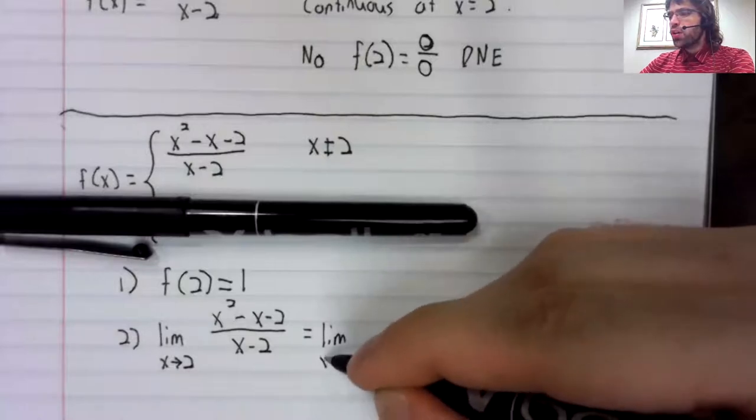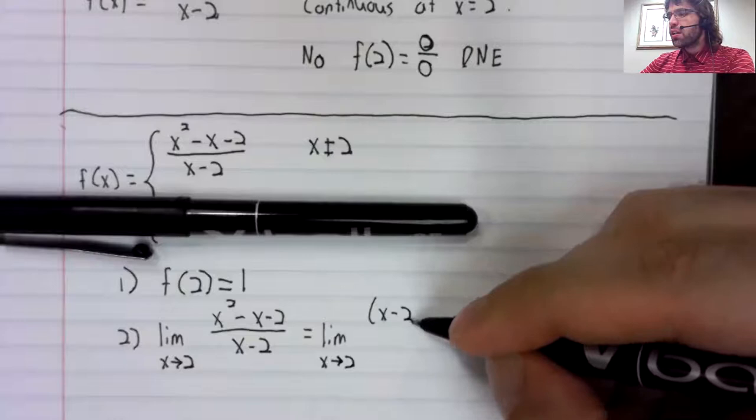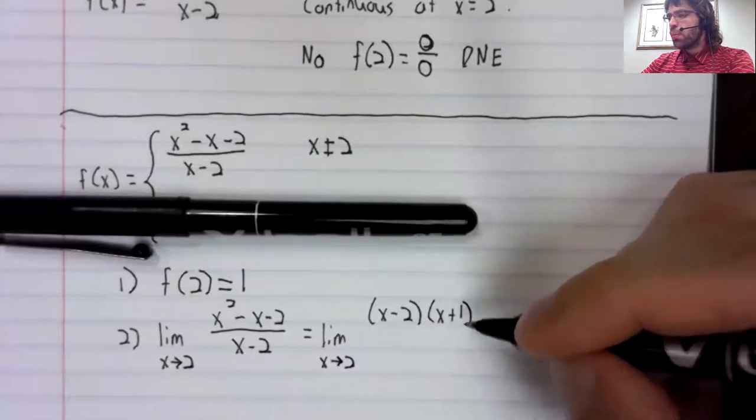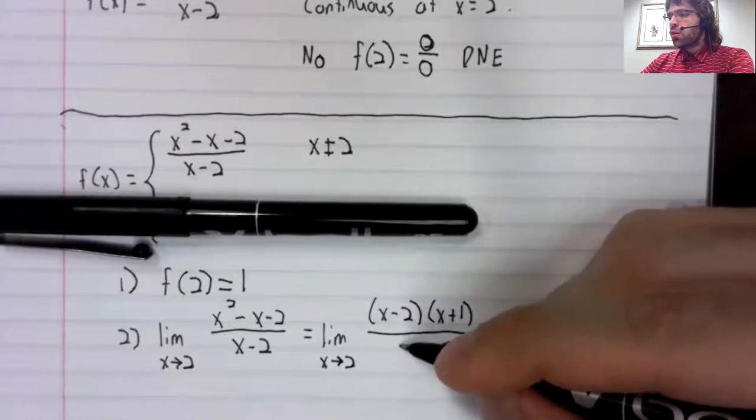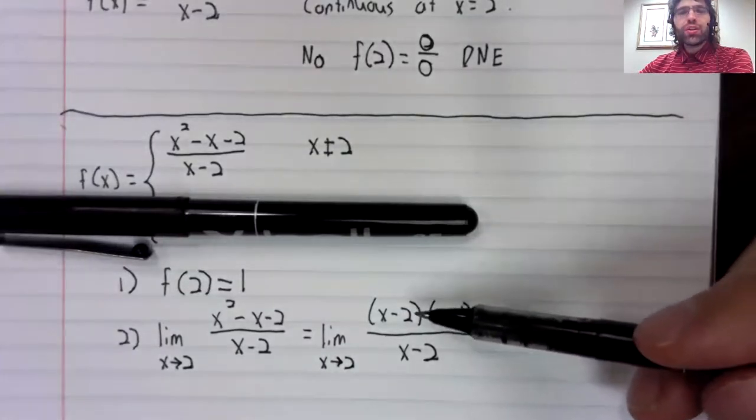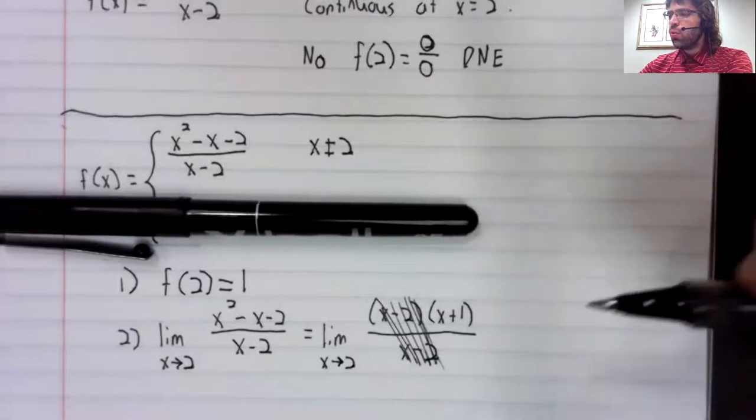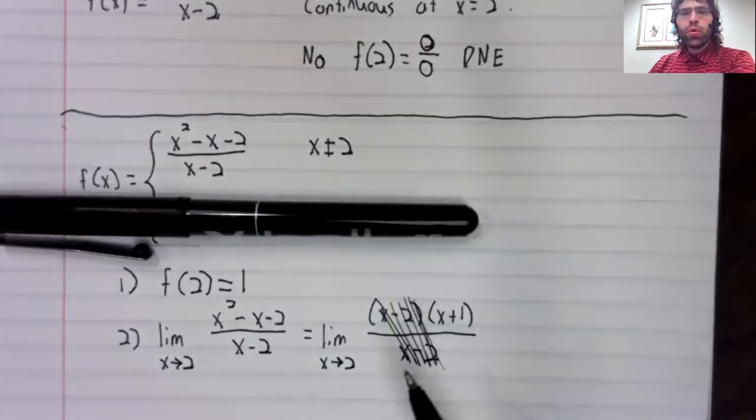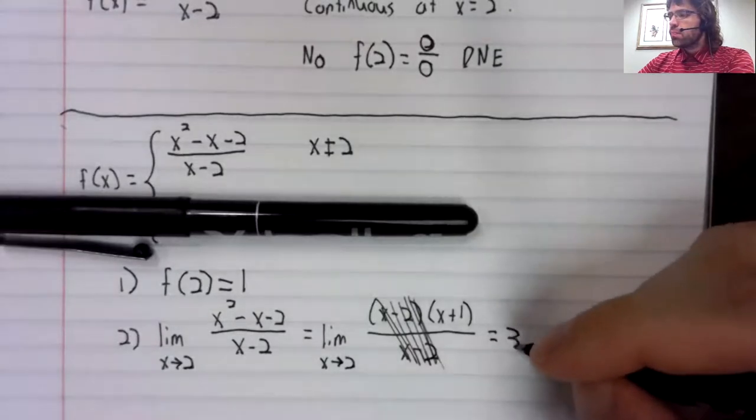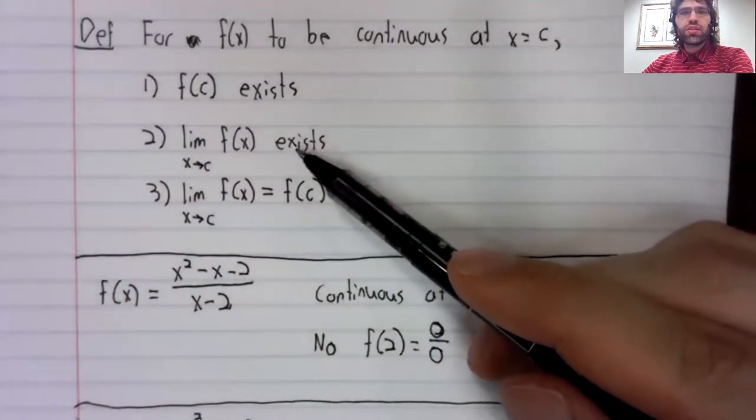Our zero divided by zero trick says that we should factor the numerator and the denominator. Well, the denominator is as factored as it's going to get, but the numerator factors like this. The x minus two cancel. What's left is a polynomial. We can simply take two, plug it in. So this limit does exist. That's the second condition satisfied.